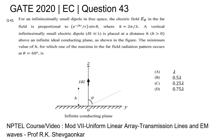This question was asked in GATE 2020 Electronics and Communication paper as question number 43, and it pertains to electromagnetic theory. In this question, we are given an infinitesimally small dipole in free space — an ideal dipole oriented along the z-axis. We are asked to find the height h from an infinite conducting surface.